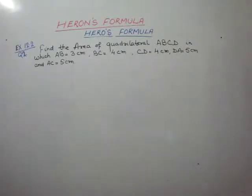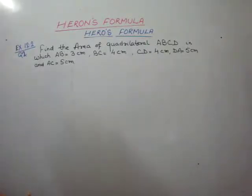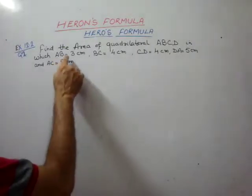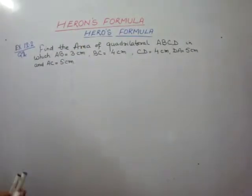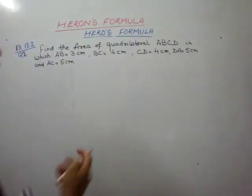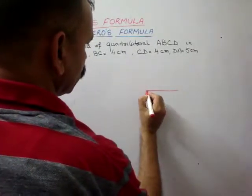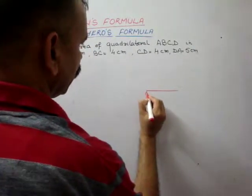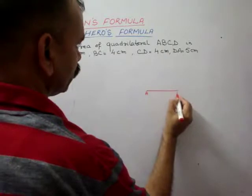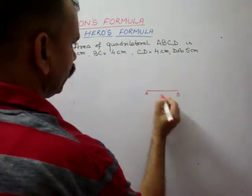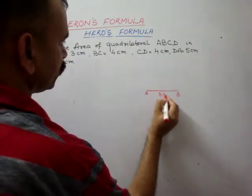Now we will construct this figure. First of all, AB is equal to 3 cm, so we will draw AB. This is our point A and this is our point B — AB is equal to 3 cm.